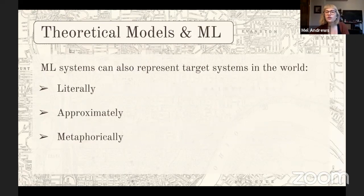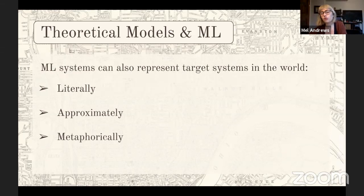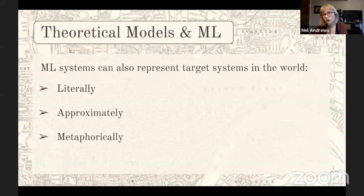On the theoretical model side, machine learning systems can be taken to be representative of target systems in the world — literally and straightforwardly, or approximately with some idealizations, and analogically as well.